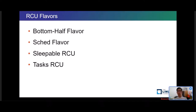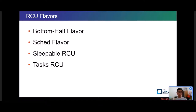Earlier I introduced the RCU implementations. Next, I will introduce more RCU flavors in the Linux kernel. What are RCU flavors? A flavor is a type of RCU used in a specific situation. RCU in the Linux kernel has many flavors. There are non-preemptable and preemptable RCU, and there are also four other flavors: bottom half flavor, scheduled flavor, sleepable, and task RCU.